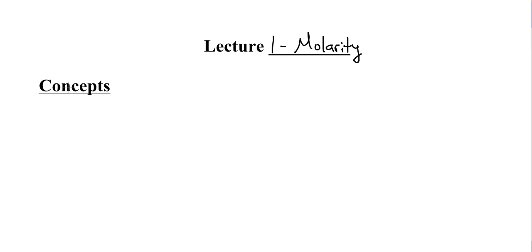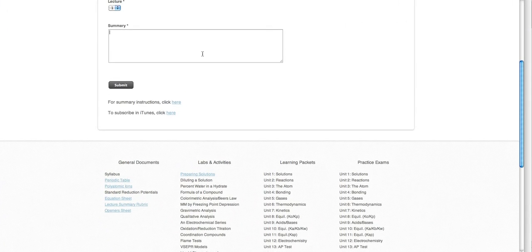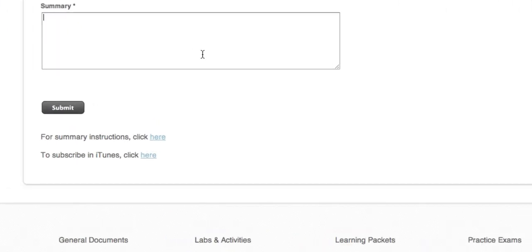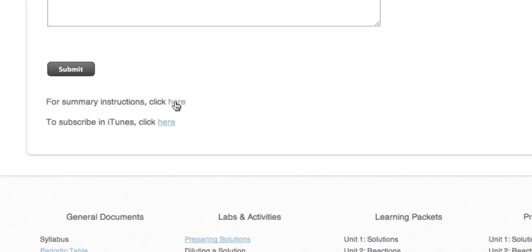Now the most important part of doing a lecture is doing the summary to the lecture. You notice here right below the video you're watching, you do have a summary box. And if you don't know how to do the summary, you can go here and click this button and look at an example of a summary. It needs to be five sentences and this shows you exactly how to do it.